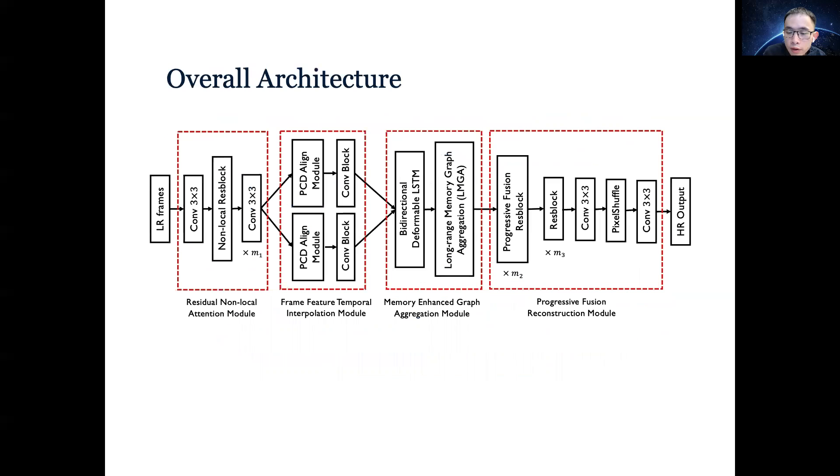The overall architecture of our proposed method is shown as follows. Our approach using the residual non-local attention module extensively explores information in both the temporal and spatial domains. Then we apply the frame feature temporal interpolation and the long-range memory graph aggregation module to handle complex motion in a dynamic scene. By capturing global temporal features, it enables the progressive fusion reconstruction to generate high-resolution output.